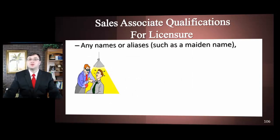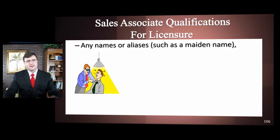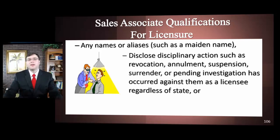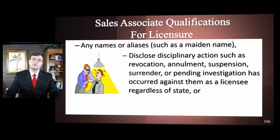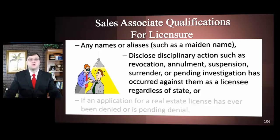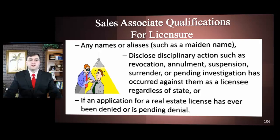Applicants must disclose any names or aliases — for example, if a woman has gotten married or changed her name, her maiden name counts as an alias. They must also disclose any disciplinary action such as revocation, annulment, suspension, surrender, or pending investigation, or if they have ever been denied or are pending denial of a license.